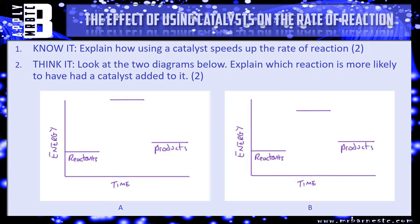I've got two questions to see how much of that you've picked up. The first one is a know-it question — the absolute basics: explain how using a catalyst speeds up the rate of reaction, talking in terms of activation energy. Then the think-it question: you've got two graphs in front of you — which one is more likely to have had a catalyst added to it, and why? Pause the video, have a go, and we'll see how you've done in a minute.